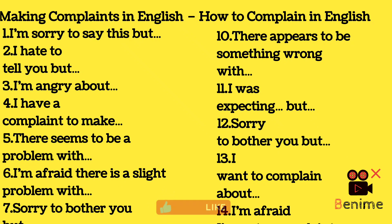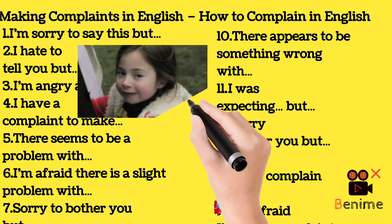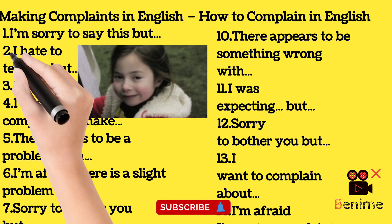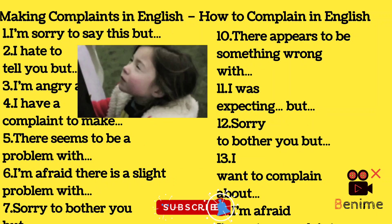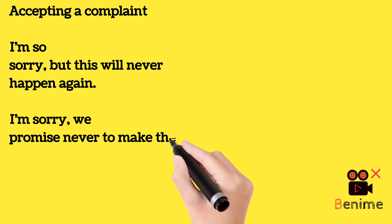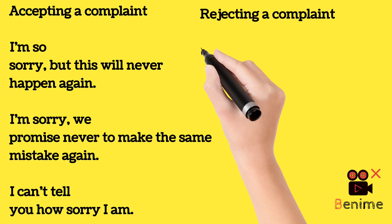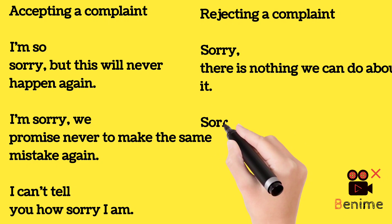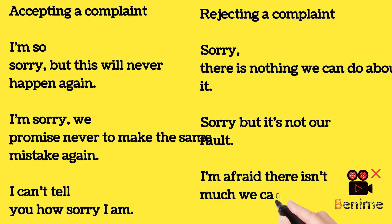I was expecting... Sorry to bother you, but... I want to complain about... I'm afraid I've got a complaint about... I have to make a complaint about... I don't understand why... Excuse me, but there is a problem... Would you mind... Accepting a complaint: I'm so sorry, but this will never happen again. I promise never to make the same mistake again. I can't tell you how sorry I am. Rejecting a complaint: Sorry, there is nothing we can do about it. Sorry, but it's not our fault. I'm afraid there isn't much we can do about it.